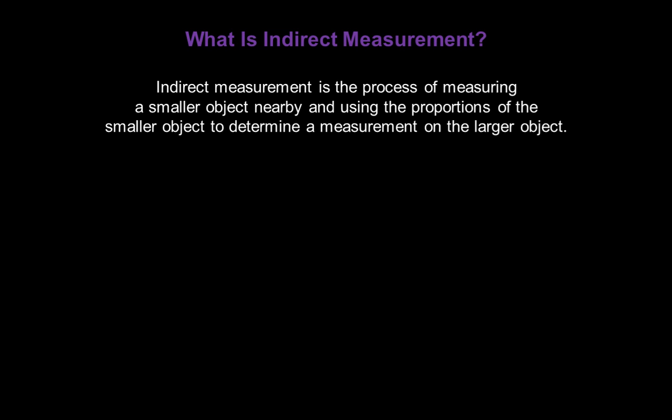Now what is indirect measurement? Indirect measurement is the process of measuring a smaller object nearby and using the proportions of the smaller object to determine a measurement on the larger object. Let's look at an example with our flagpole.